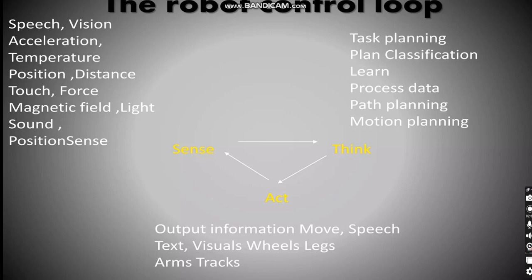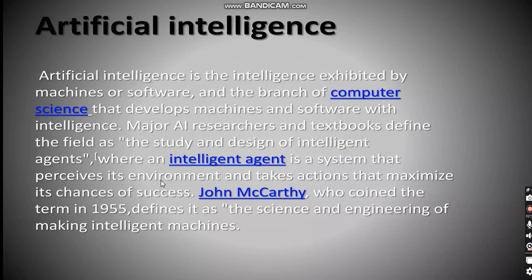And the think is task planning, plan classification, learn, process data, path planning, motion planning. So everyone has a criteria of its own. This is the control loop of the robot.